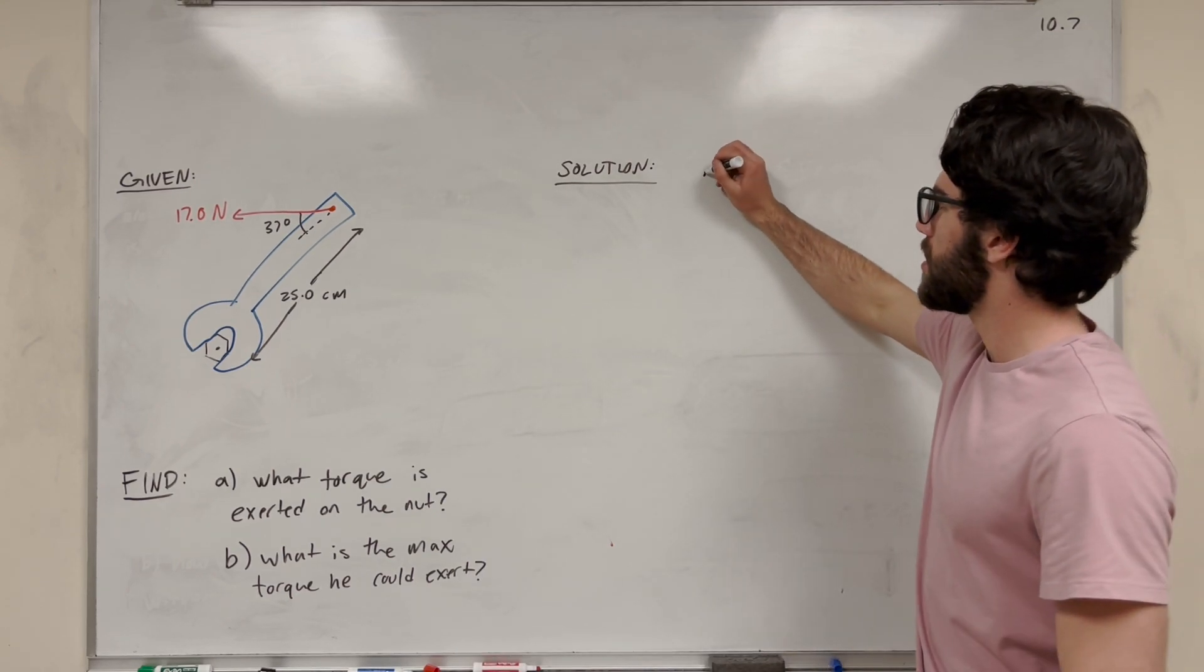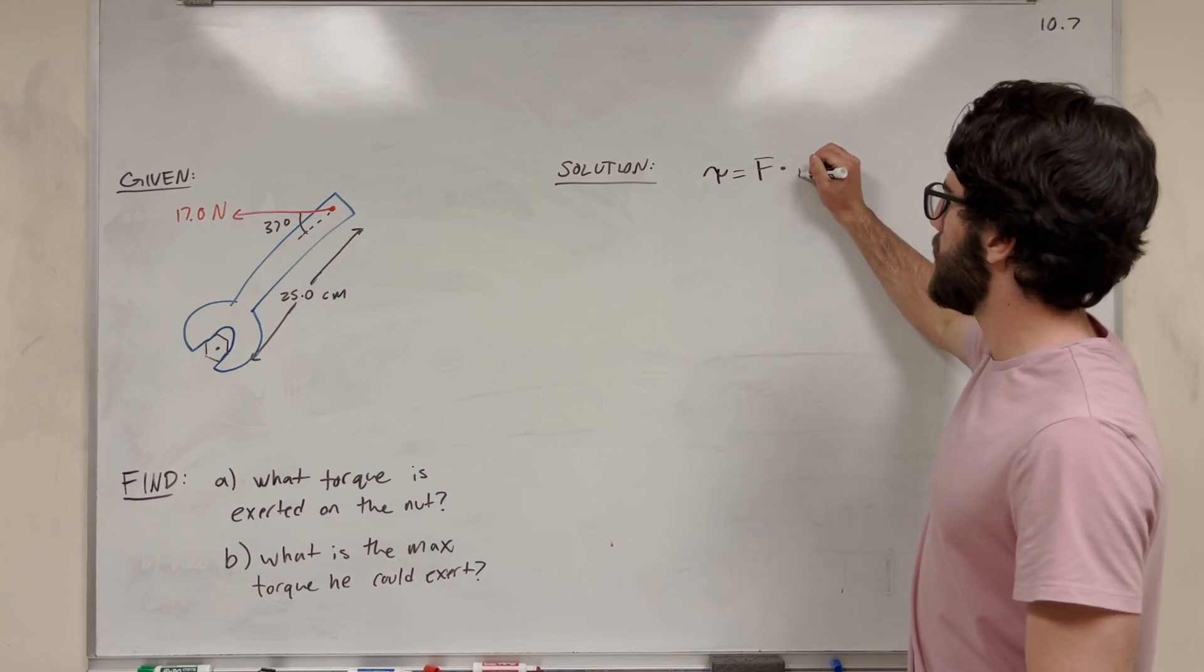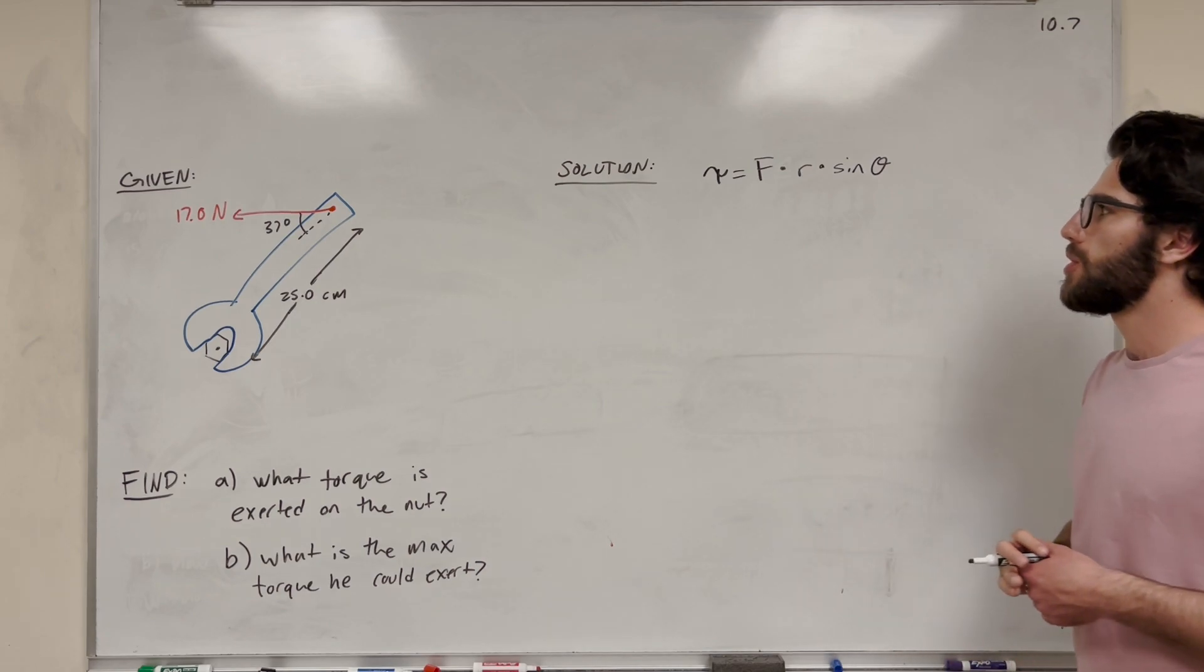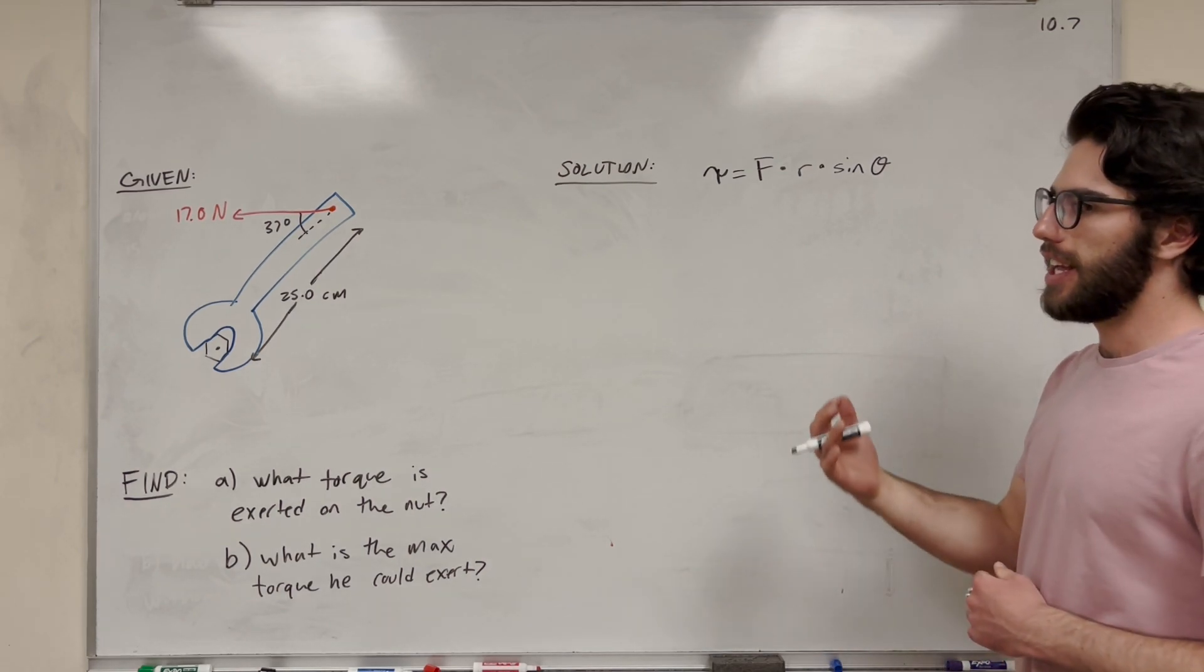The equation we're going to be using for this is that torque is equal to force times distance times sine of theta. So torque is basically just force times distance. And then if it's at an angle, it's going to be different.